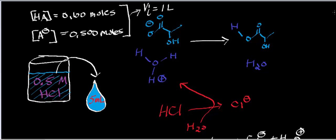If I express the HA concentration in terms of molarity, it would be 0.1 molar, because you take moles divided by the volume, which is 1 liter, so you get 0.1 molar. Likewise, the concentration of A- in molarity would be 0.5 molar, or 0.5 moles per liter.